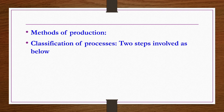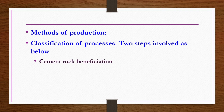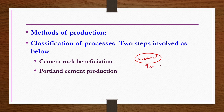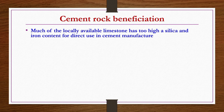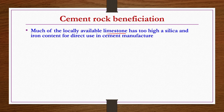The production process involves two steps: cement rock beneficiation and Portland cement production. If limestone has sufficient quality, beneficiation is not required and you can go directly to Portland cement production. But most limestone sources are low grade with many impurities, so beneficiation is required. Much of the locally available limestone has too high silica and iron content for direct use in cement manufacture, so it must be beneficiated by ore dressing or froth flotation.